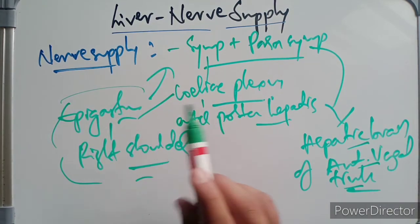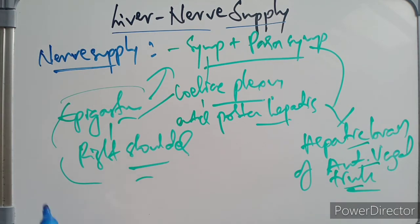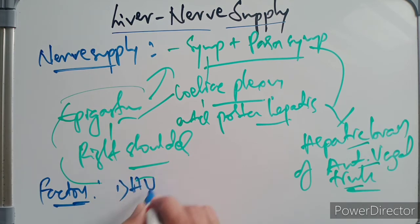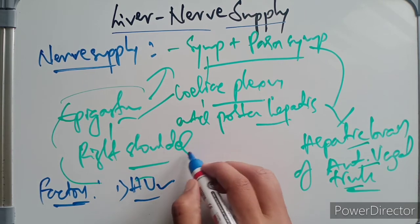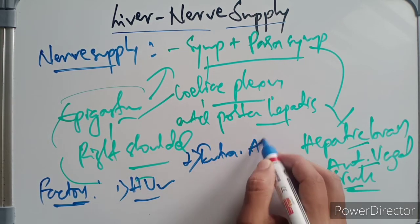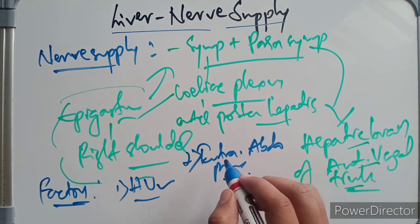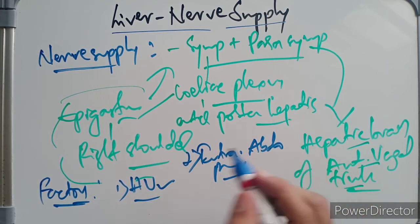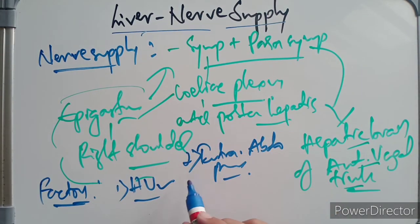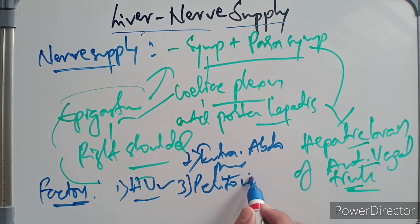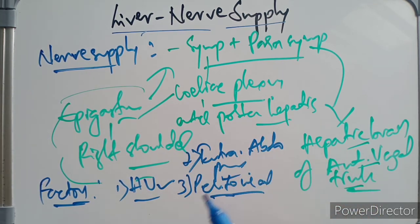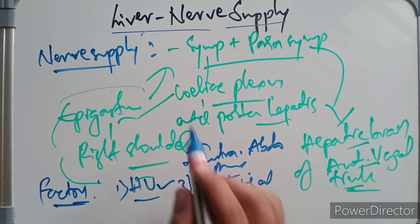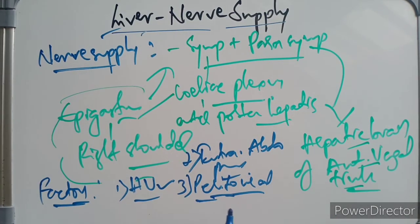Finally, the factors keeping the liver in position: first, the hepatic veins, which connect the liver to the inferior vena cava, also support keeping the liver in position. Second, the intra-abdominal pressure maintained by the tone of the abdominal muscles helps keep the liver in its anatomical position. Third, the peritoneal ligaments, which connect the liver to the abdominal walls, also help maintain the liver's anatomical position.